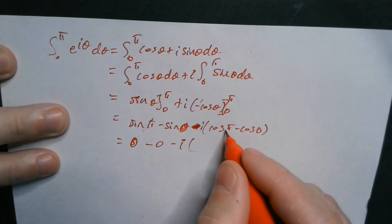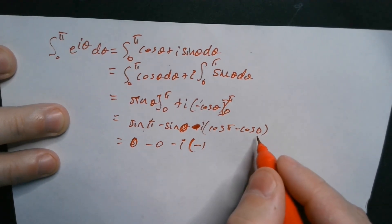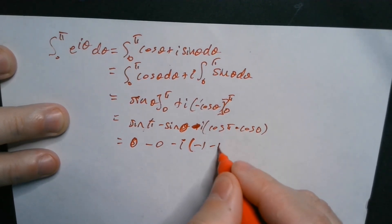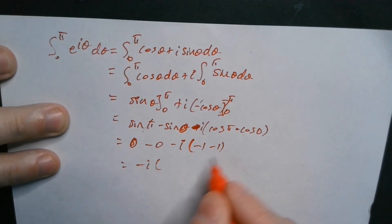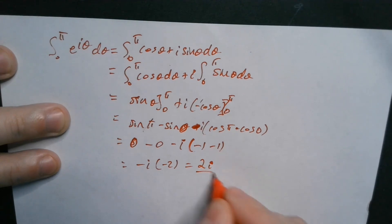minus i. Now cosine of pi by the unit circle is negative 1, cosine of 0 is positive 1 with the minus here, so minus 1 again. So you end up with a negative i times here negative 2, so the answer therefore is 2i.